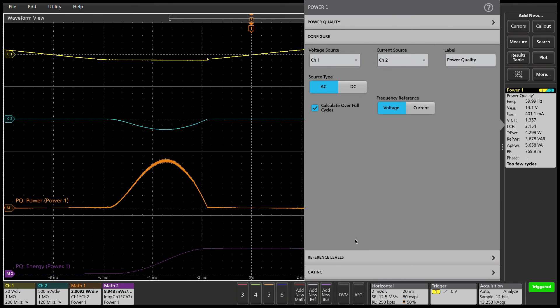Note that the voltage and current sources are configured to their respective scope channels. For this example, the source type is AC with the voltage signal as a frequency reference.